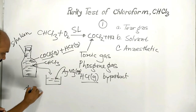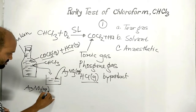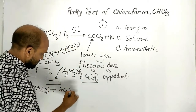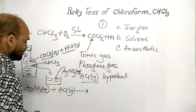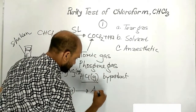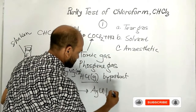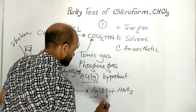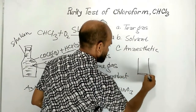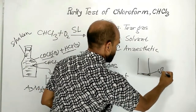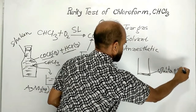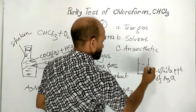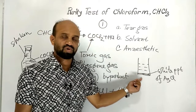The silver nitrate reacts with the hydrogen chloride gas, and as a result a white precipitate of silver chloride is formed, along with nitric acid.